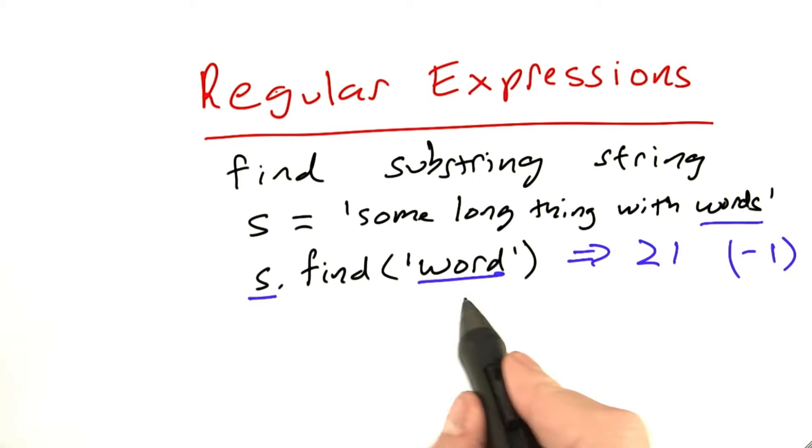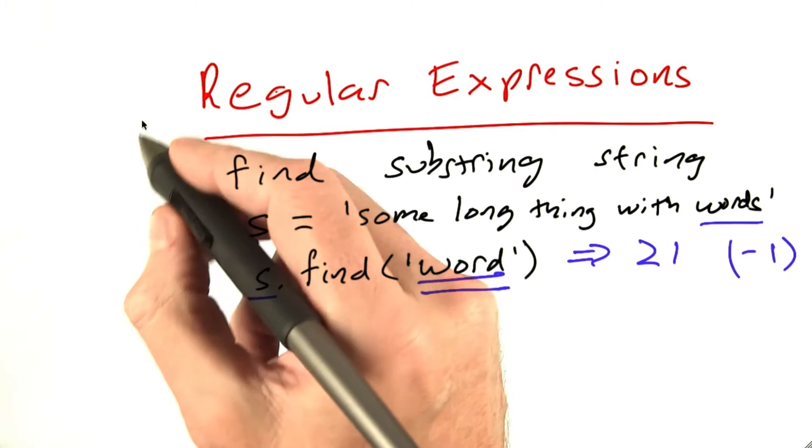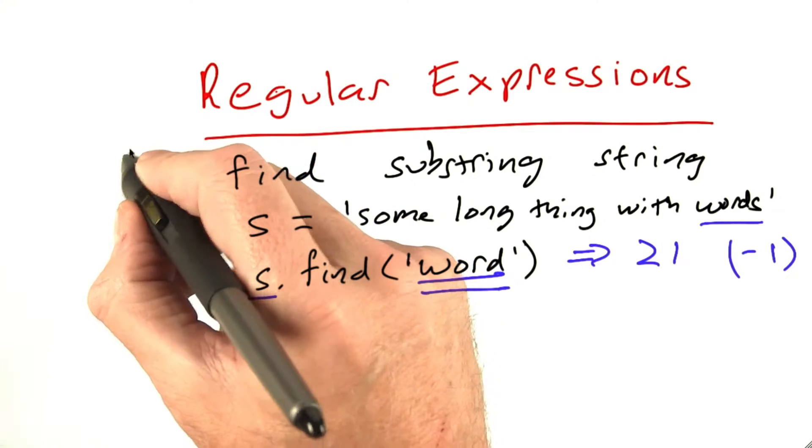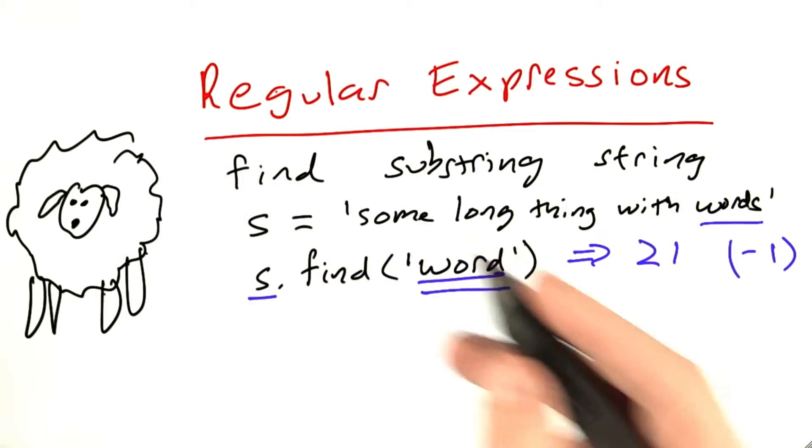But suppose we aren't looking for exactly one individual word. Suppose there's a whole family of words that we want to find. Take a crazy example. Let's say we're interested in the family of words used by sheep. There's a sheep and what do they say?